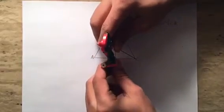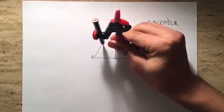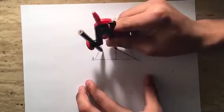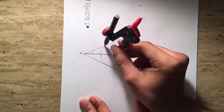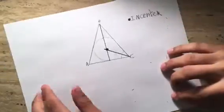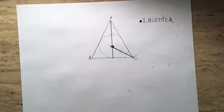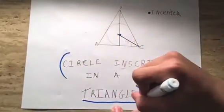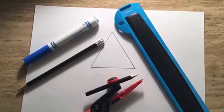For step four, place the pointed end of the compass on the point of intersection, as you guys are seeing right now. Then open the compass to the shortest distance from the point of intersection to any side of the triangle, and construct your circle inside the triangle. Keep in mind that the circle has to touch all three sides of the triangle, as you guys have seen right there. This is how you construct a circle inscribed in a triangle.